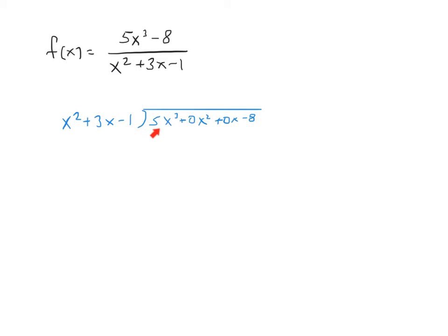We divide. 5x cubed divided by x squared is 5x. We multiply. We get 5x cubed plus 15x squared minus 5x. Subtract and bring down.